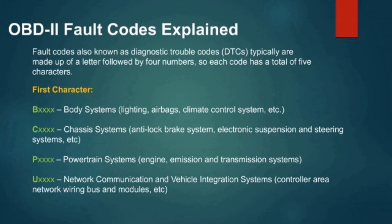The first character identifies the general system. B indicates Body Systems — lighting, airbags, climate control, etc. C indicates Chassis Systems — anti-lock brake system, electronic suspension and steering systems, etc. P indicates Powertrain Systems — engine, emission, and transmission systems. U indicates Network Communication and Vehicle Integration Systems — Controller Area Network wiring bus and modules, etc.